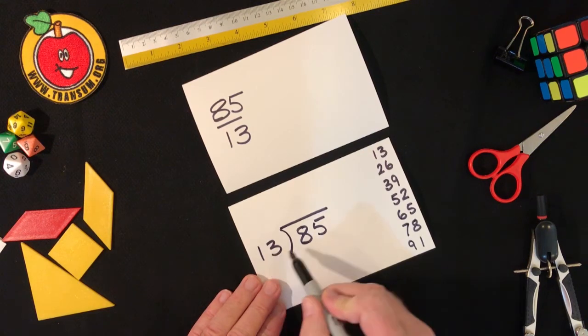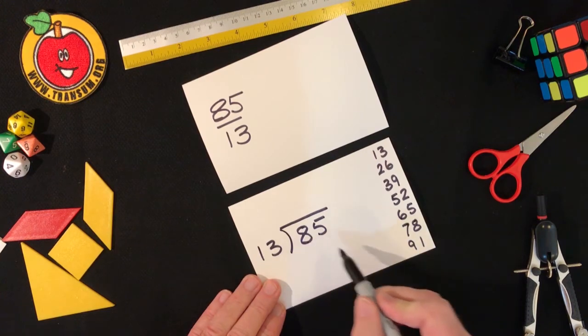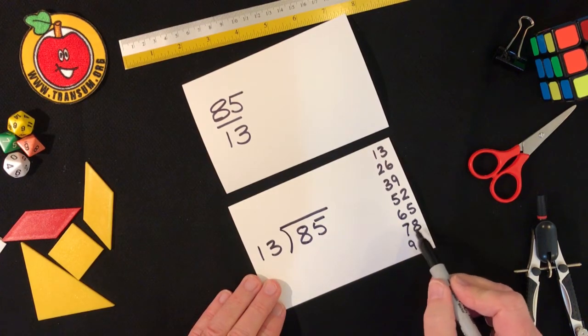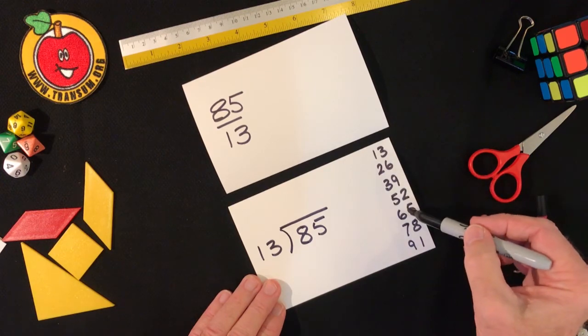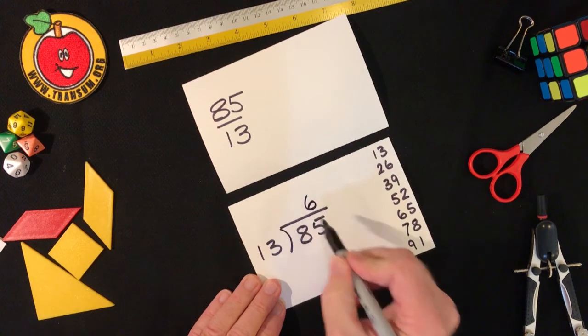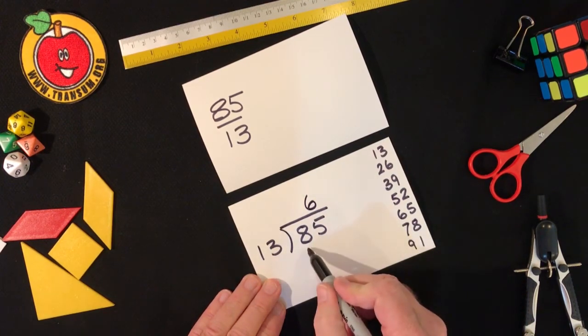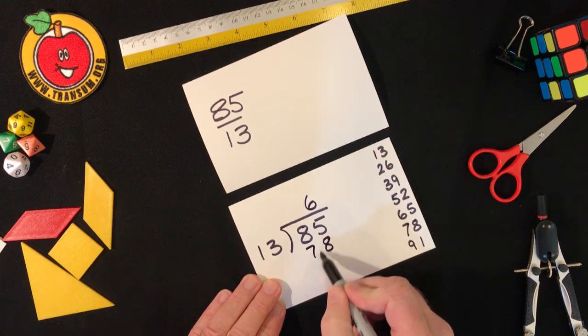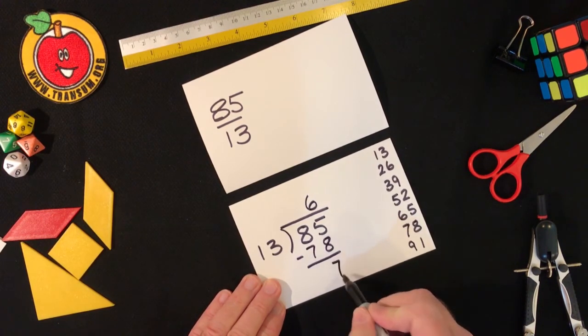So thirteens into eight won't go. So thirteens into eighty-five, well that's the biggest number less than eighty-five so one two three four five six times. So I'll put a six here because six thirteens are seventy-eight.